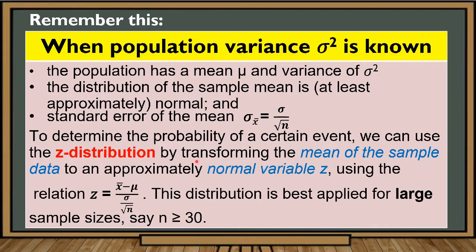To determine the probability of a certain event, we can use the Z distribution — that is, simply transforming the mean of the sample data to an approximately normal variable using the relation: Z equals the sample mean minus the population mean, divided by the standard error of the mean, which is the population standard deviation divided by the square root of the sample size n. Take note that the Z distribution is best applied for large sample sizes, where n is greater than or equal to 30.